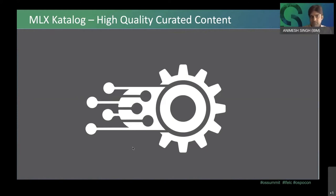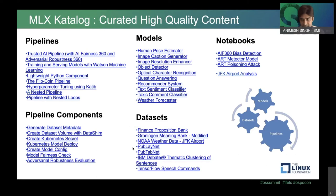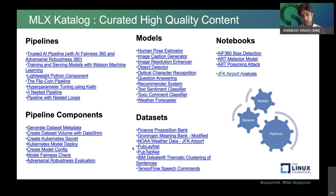Let's talk about the catalog and its actual content. There are default samples which come pre-populated — models like object detection, image caption generator, image resolution enhancer, and weather forecaster; datasets like coordinate, finance, proposition bank, and JFK dataset. There are also pipelines and pipeline components around, for example, a Trusted AI umbrella which allows you to detect fairness on your models or do adversarial robustness checks. When running your own instance, you can register your own assets. The goal is for you to bring your own assets and register them.